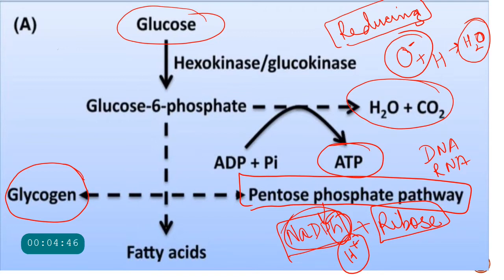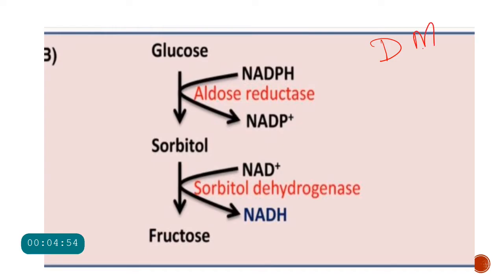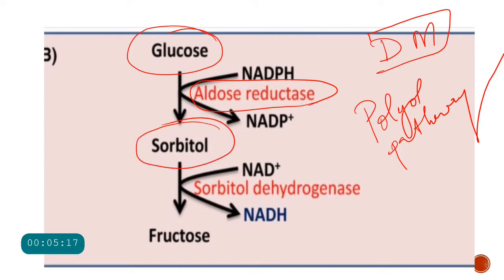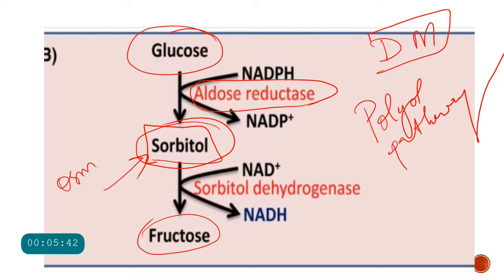Therefore the pentose phosphate pathway and NADPH are very important. However, in diabetes with poorly controlled chronic hyperglycemia, glucose enters a toxic pathway called the polyol pathway. In this pathway, glucose is converted by the enzyme aldose reductase into sorbitol, which is then converted into fructose by sorbitol dehydrogenase. This second step can get overwhelmed quickly, leaving sorbitol to accumulate — specifically within the lens of the eye. Sorbitol acts as an osmotic agent, absorbing water and leading to cataracts.